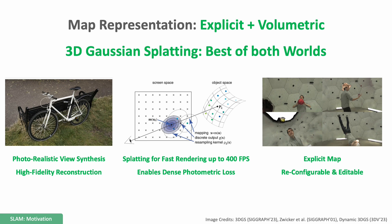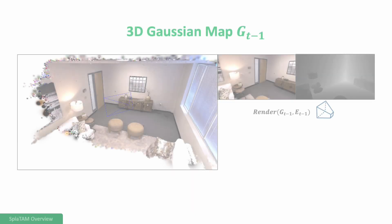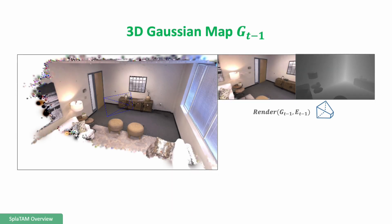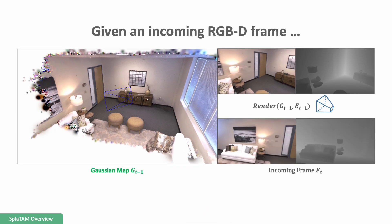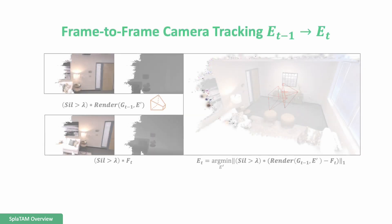Now let us see how SPLATAM uses 3D Gaussians. Given an initialized 3D Gaussian map, SPLATAM uses splatting to differentially render color, depth, and a visibility silhouette from any camera pose. For an incoming frame FT, SPLATAM starts by estimating the camera pose from the new image. We guide this optimization using a visibility silhouette to ensure the optimization isn't penalized by the presence of new information.